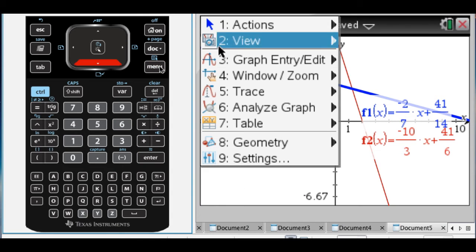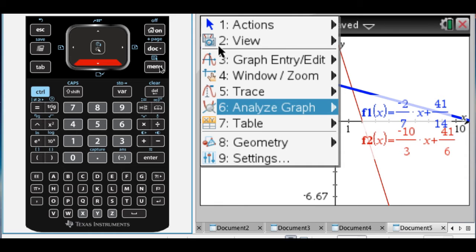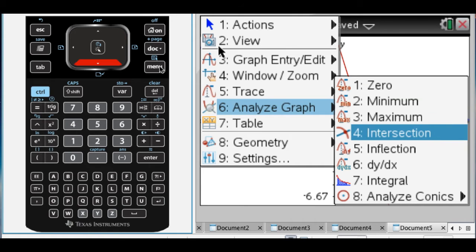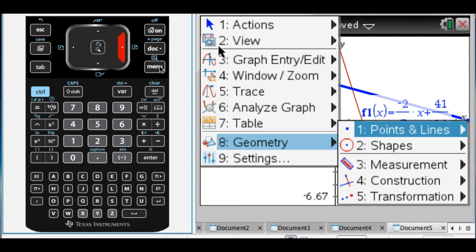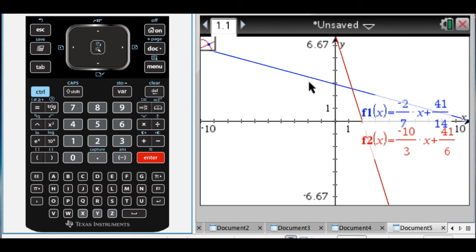Then if you go to menu, you can go to analyze graph and find the intersection, which is fine. Something that's a little better if you have more than one intersection point is to go to geometry, points and lines, and intersection points.